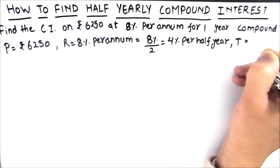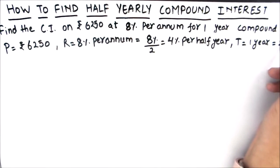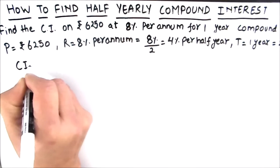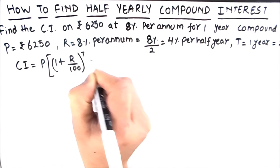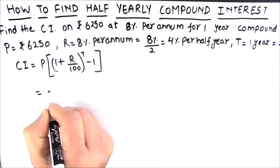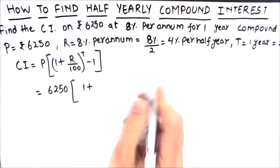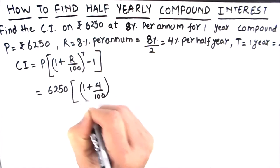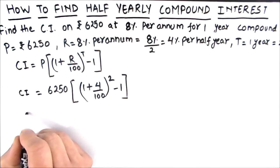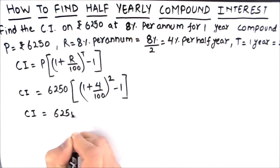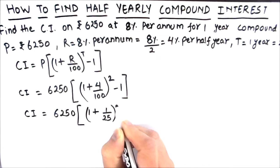Time period is given as 1 year, and there are 2 half years in a year, so time becomes 2 half years. The compound interest formula is CI = P × [(1 + r/100)^t − 1]. Substituting: 6,250 × [(1 + 4/100)^2 − 1]. Here 4/100 = 1/25, and the exponent is 2t = 2 half years, so the power is 2.